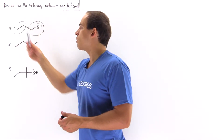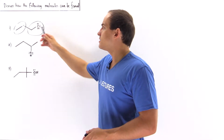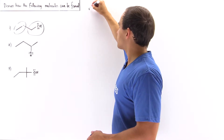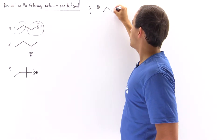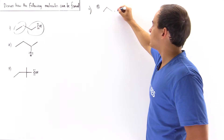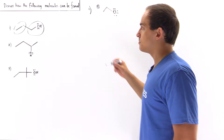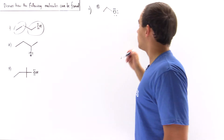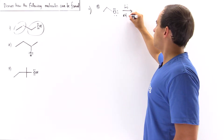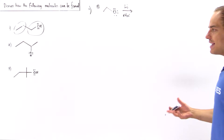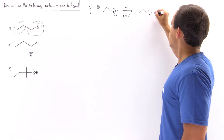First we want to synthesize our organometallic reagent that will attack the carbonyl to form this alcohol. In step A, we start with a molecule containing a halide — let's say chlorine — attached to an ethyl group of two carbons. We mix this with lithium in the presence of ether to form our organolithium reagent.